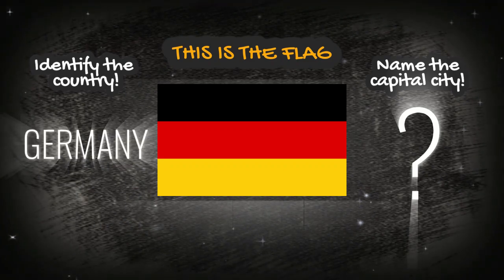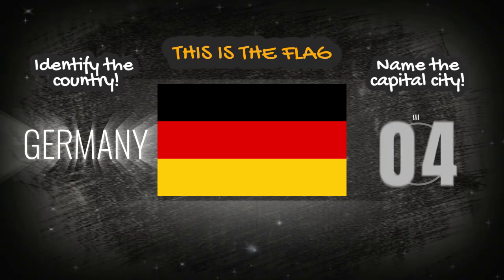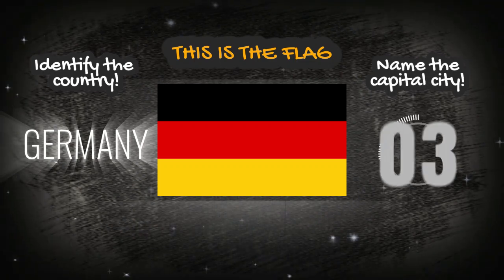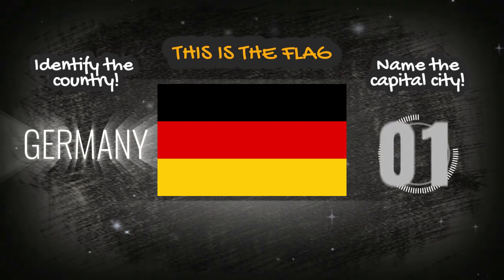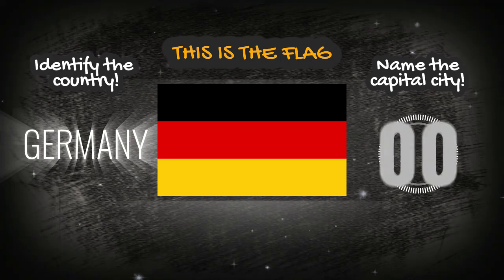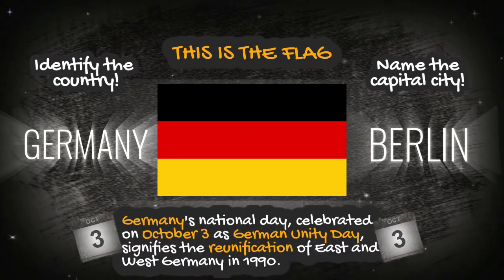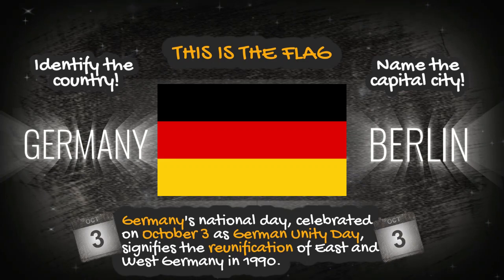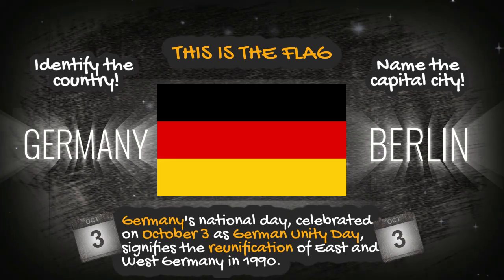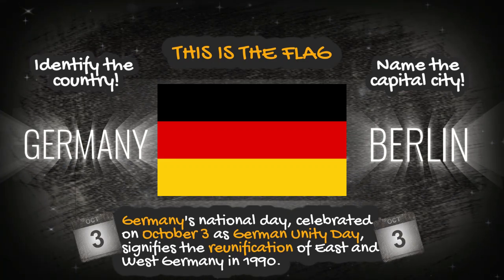Let's see if you can identify the country. The answer is Germany. Now, if you know it, name the capital city. Germany's National Day is celebrated on October 3rd as German Unity Day, which signifies the reunification of East and West Germany in 1990.